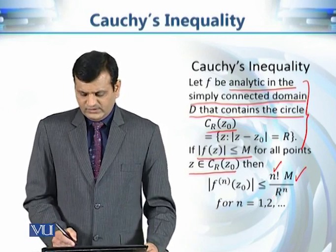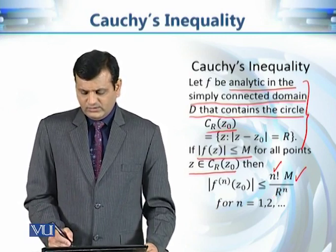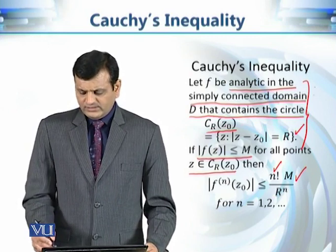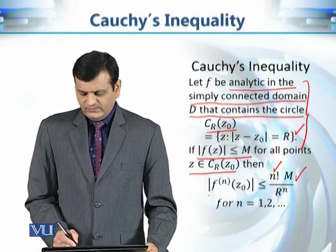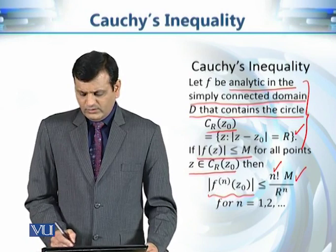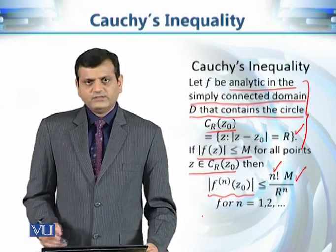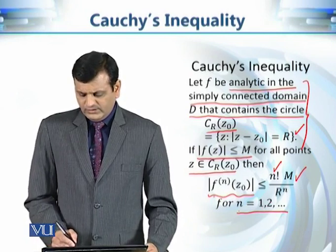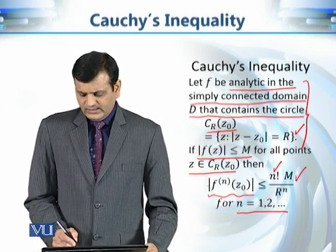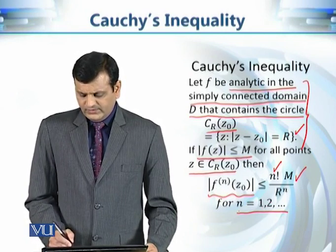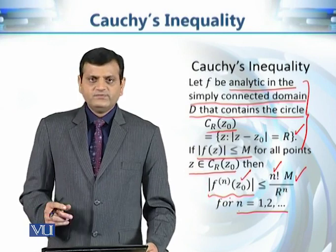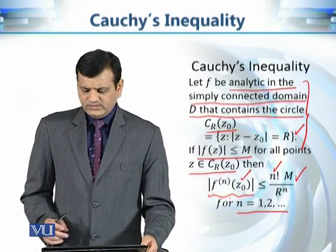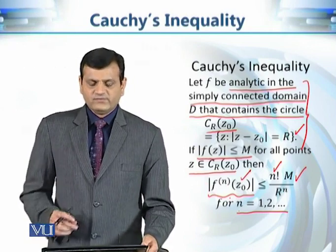This inequality is non-trivial in the sense that by just having information about the function at the points of a circle, we can talk about the upper bound at the center of the circle. We have just this circle C_r(z₀) with this description, and under these conditions we can give the upper bound on any number of derivatives at the center z₀.